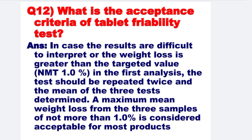Next: What is the acceptance criteria of tablet friability test? In case the results are difficult to interpret, or the weight loss is greater than the target value in the first analysis, the test should be repeated twice and the mean of the three tests determined. A maximum mean weight loss from the three samples of not more than 1% is considered acceptable for most products.